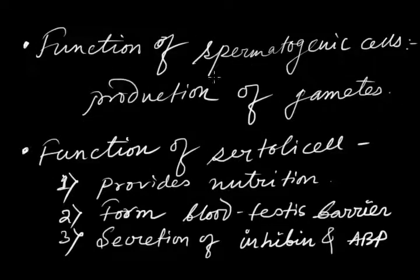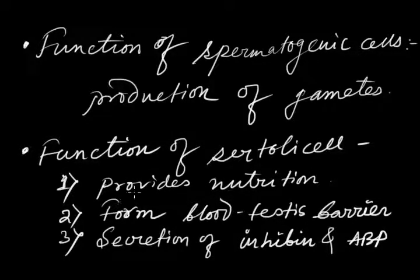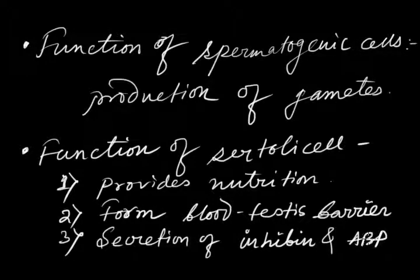Now the function of each type of cell. First, the function of spermatogenic cells: they are solely involved in the development and formation of male gametes, i.e., sperm. The next important cell type is the Sertoli cell, which plays various important functions such as providing nutrition to the newly formed male gametes. They also produce the blood-testes barrier, preventing the entry of blood within the testes. They also secrete inhibin and androgen binding protein, abbreviated as ABP.